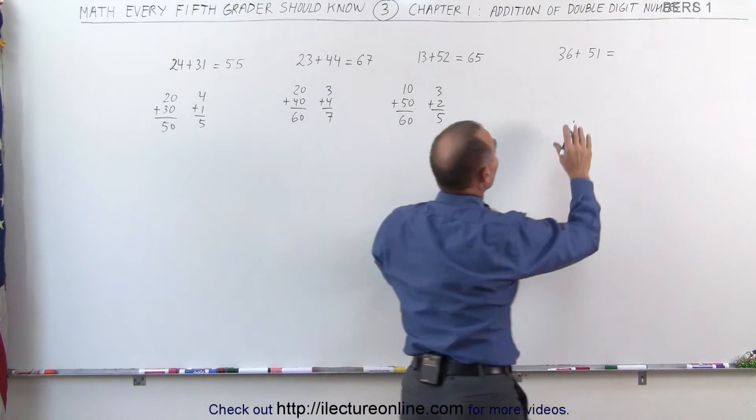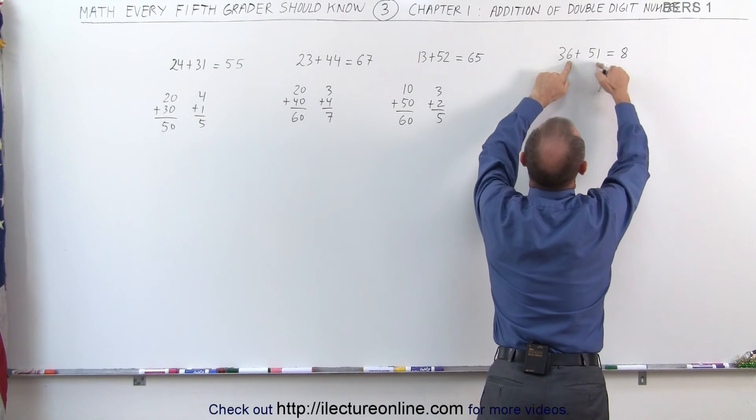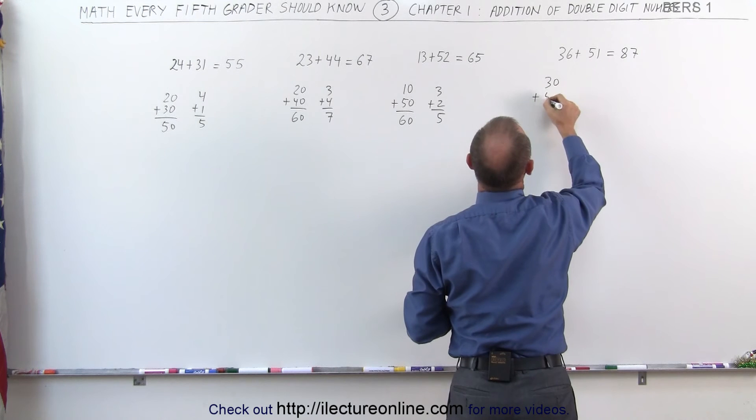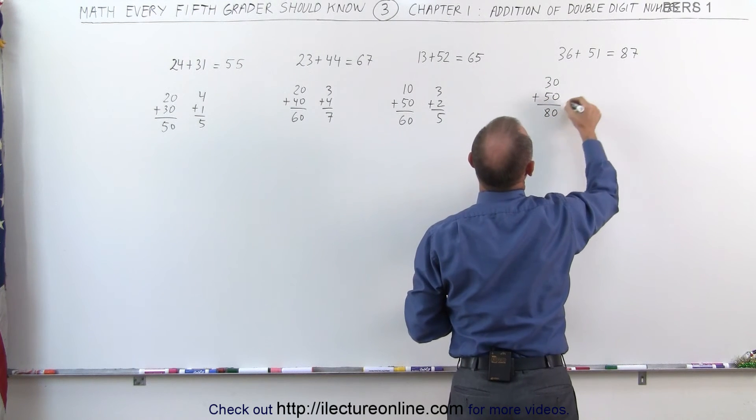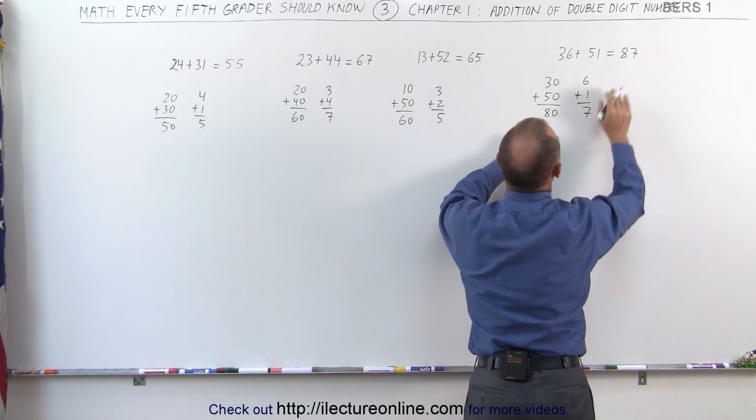And our last exercise, here we see that 3 plus 5 is 8. 6 plus 1 is 7. What we did here was, we took 30, we added that to 50, to give us 80. We took 6, add that to 1, we get 7. 80 plus 7 is 87.